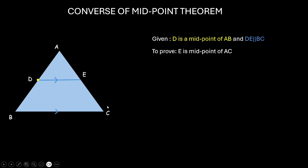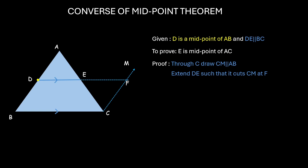For that, we need to draw one line over here. So, we will just draw a line CM, which is parallel to AB. And, we will extend DE as well, such that it intersects CM at F.